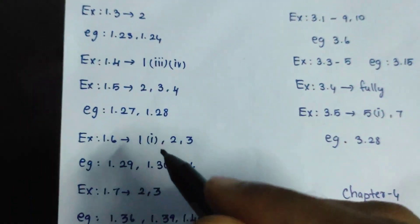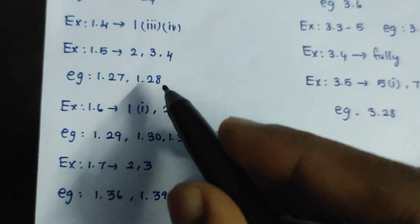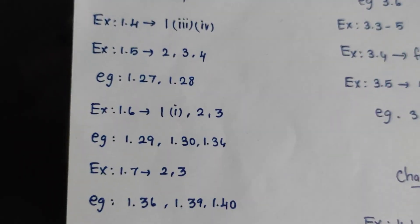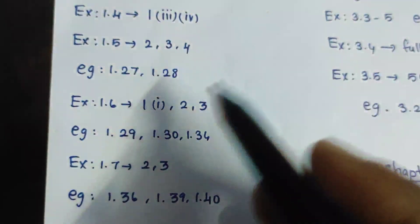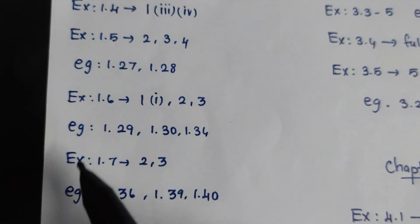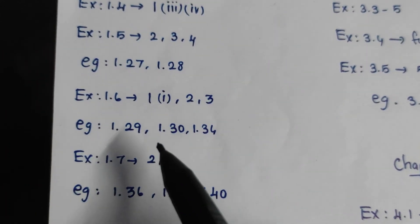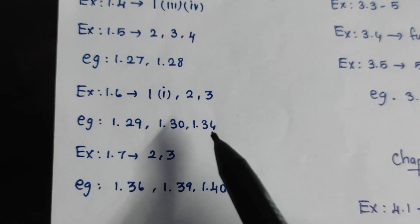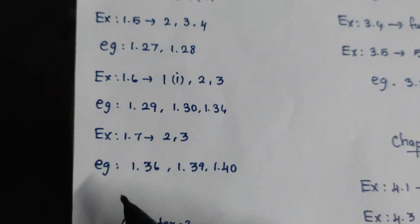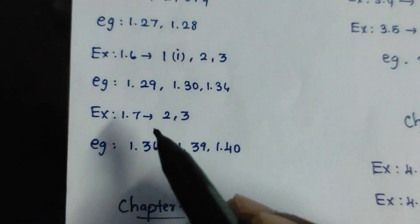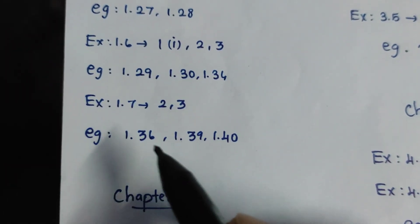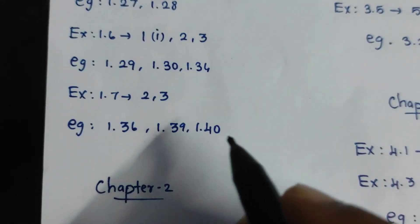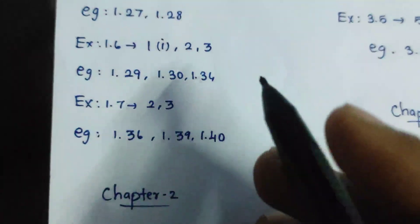Example 1.27, Example 1.28. Example 1.6, first is 2.3. Example 1.29, Example 1.30, Example 1.34. Example 1.7, Example 1.36 — 36, 39, 40.